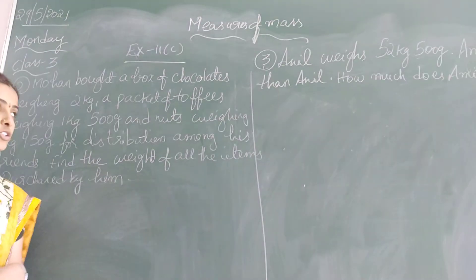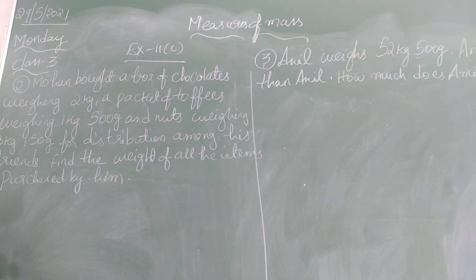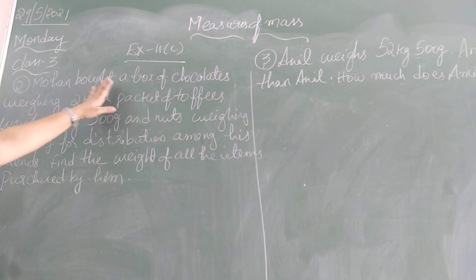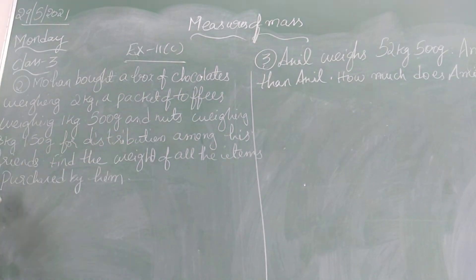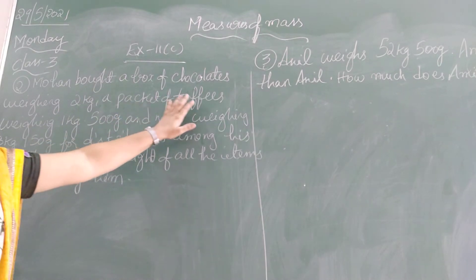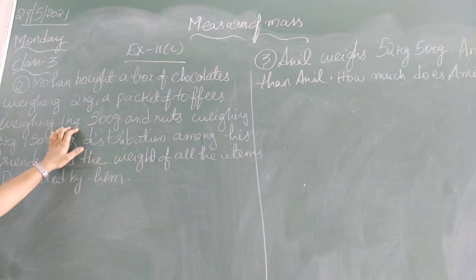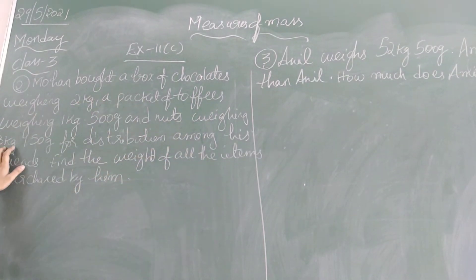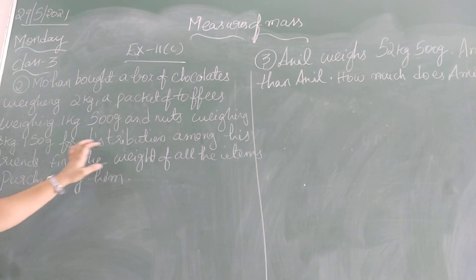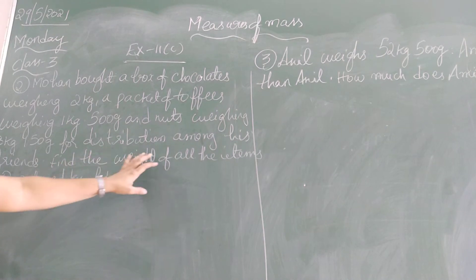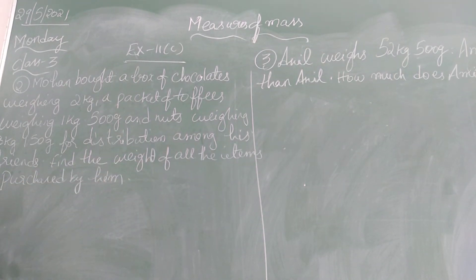Let us continue the next exercise with relevancy. The problem is about Mohan, who got a box of chocolates weighing 2 kg, a packet of toffees weighing 1 kg 500 grams, and nuts weighing 3 kg 150 grams, for distribution among his friends. We need to find the total weight of all the items purchased.